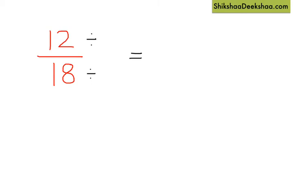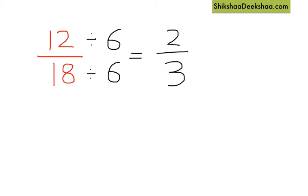We can find more than one number by which we can divide 12 and 18 without leaving any remainder. For instance, 3 can also divide 12 four times and 18 six times. Likewise, 6 can also divide 12 two times and 18 three times. So you can see that we can easily get many equivalent fractions.